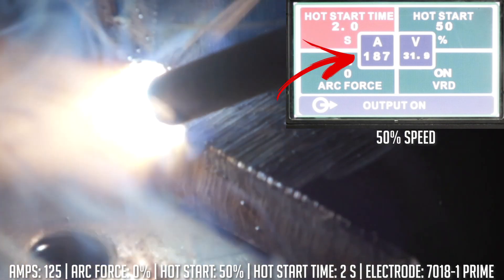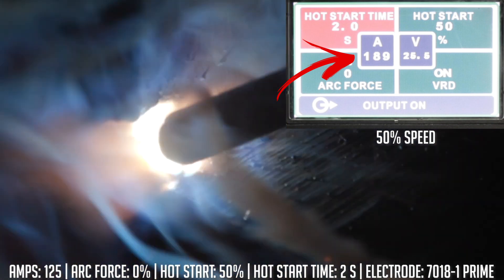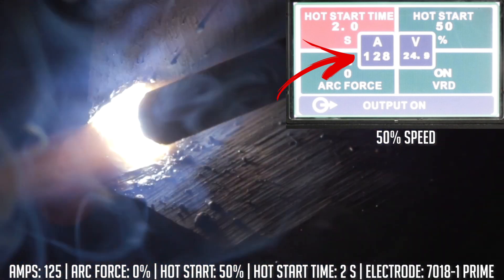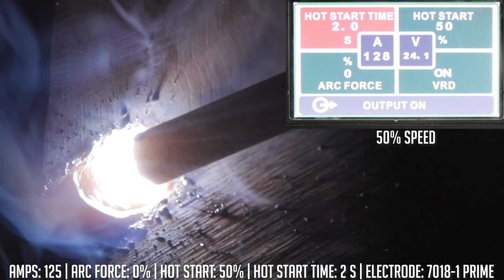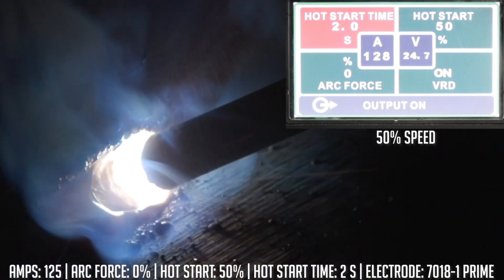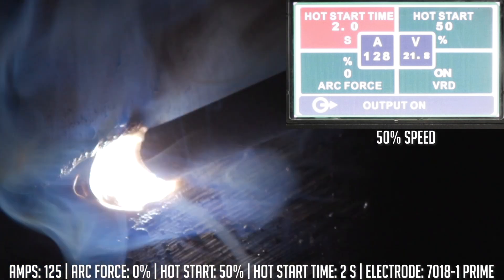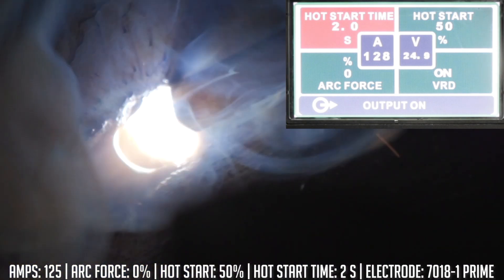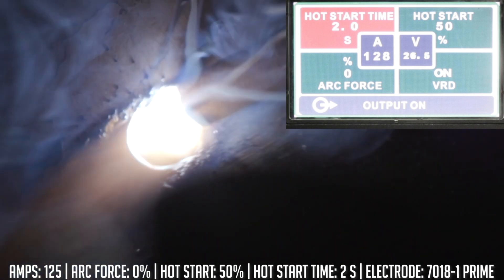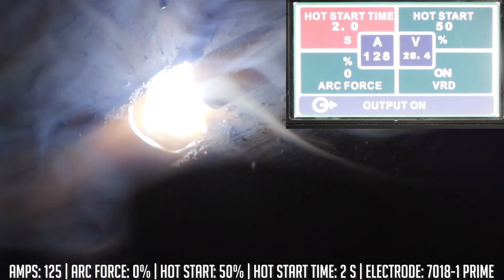As you should have seen, for that first two seconds the puddle was a little bit wider and flatter than it was two seconds after the arc initiation, and that's because it dropped back down from that 188 to 125, which is where we have the machine set. Like I said before, it's good for starting up on the edge of the plate so you don't get a cold start, it's good for tie-in so you don't get cold laps.